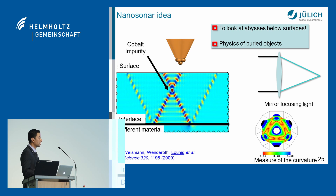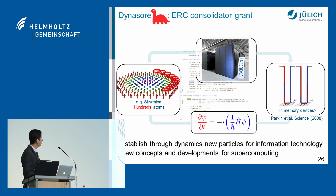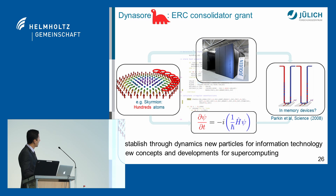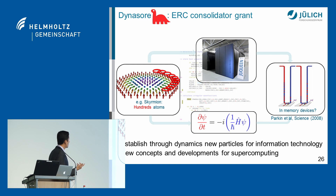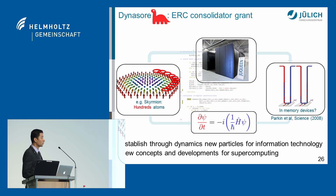I'd like to give you a glimpse of future work. The idea with the ERC consolidator grant is to look at the dynamics and motion of magnets containing hundreds of atoms using this quantum mechanics-based approach. One example is what I call a magnetic flower — a skyrmion texture where the magnetic moment in the center points down and smoothly rotates upward, providing topological protection that makes it very difficult to destroy. These objects can be moved in devices with lower energy costs than other candidates, and we want to establish them as new particles for information technology — but this requires developing new algorithms and methods using supercomputing power.